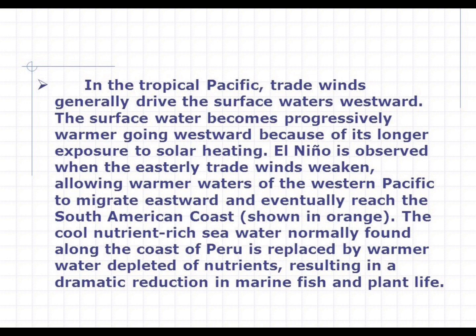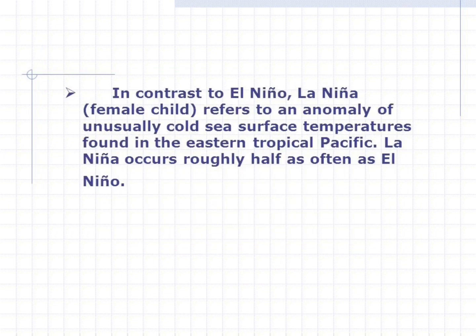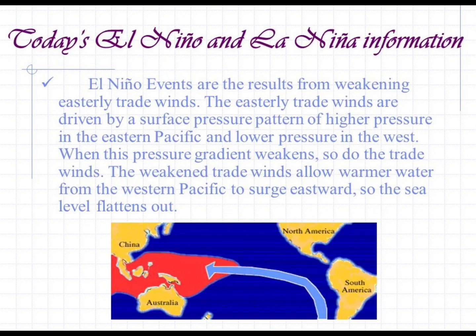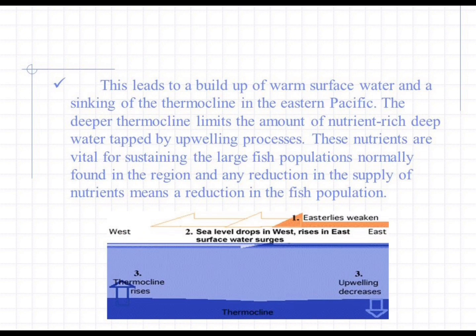In contrast to El Niño, La Niña refers to an anomaly of unusually cold sea surface temperatures in the eastern tropical Pacific. La Niña occurs roughly half as often as El Niño. El Niño events result from weakening easterly trade winds driven by higher pressure in the eastern Pacific and lower pressure in the west. When this pressure gradient weakens, so do the trade winds, allowing warmer water from the western Pacific to surge eastward, flattening sea level. This leads to a buildup of warm surface water and a sinking of the thermocline in the eastern Pacific.